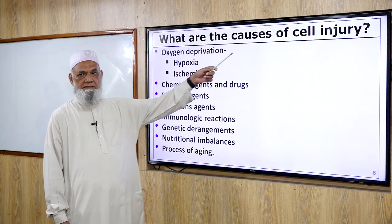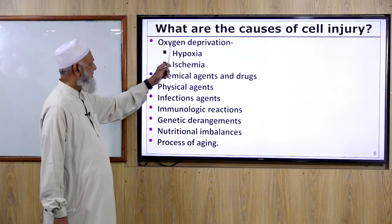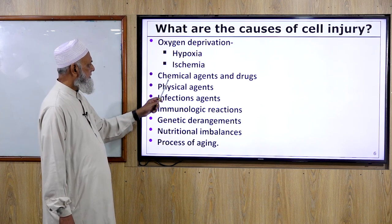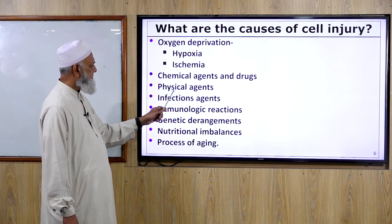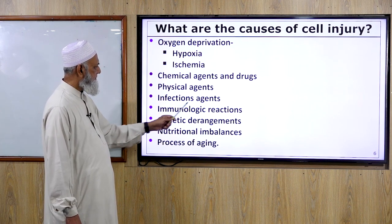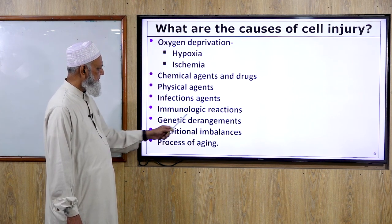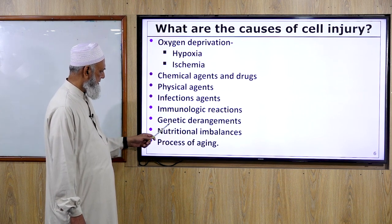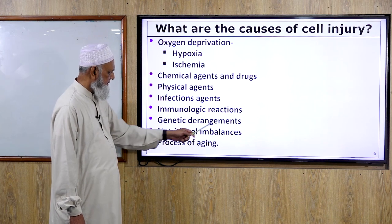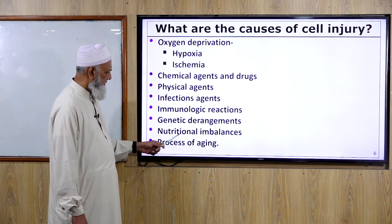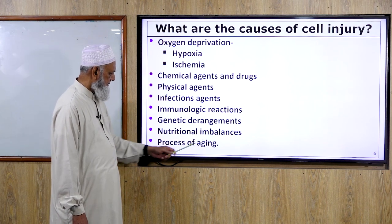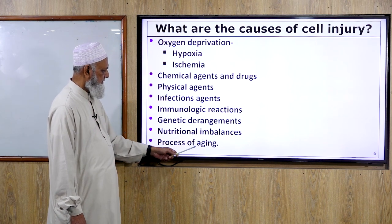What are the causes of cell injury? Oxygen deprivation, chemical agents, physical agents, infectious agents, immunological reactions, genetic derangements, nutritional imbalances, and the process of aging.